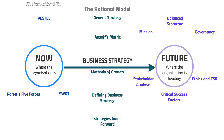We're going to start by looking at the future — where the organization is going — because we don't know what they need to do to get to the future if we don't look there first. If we look at the now first, we might think the company is in a good position and doesn't need to do anything else. But we need to look at where the company wants to be before the rest of our analysis.